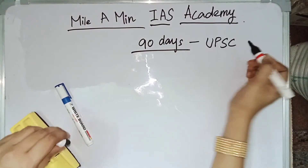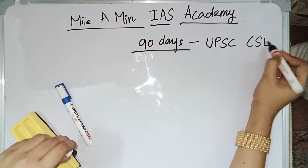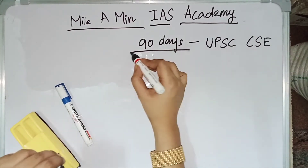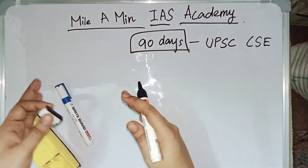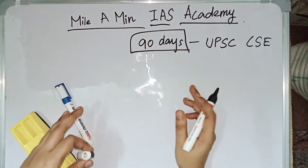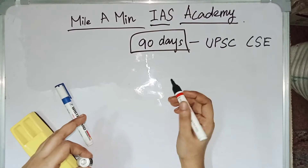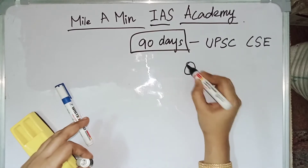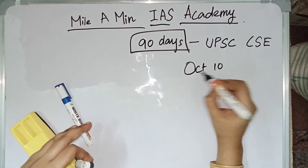We just have 90 days for our UPSC civil service exam, and this 90 days is because of the exam postponing. Our exam is scheduled on June 27th but now we have our exam on October 10th.